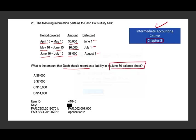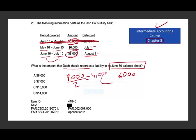The April 15 to May 15 bill of $5,000 was paid, so we cross it out — it's not a liability anymore. The May 15 to June 15 bill of $6,000 was not paid until July 1st, so on June 30th this was a liability: $6,000. Then June 16 to July 15, the bill was $8,000 and not paid until August. Half of that month was in June, so half should be counted on the June 30 balance sheet. Therefore, the utility liability is $10,000 — $6,000 plus half of $8,000. This is basically a form of adjusting entry, which is why I refer you to Chapter 3.